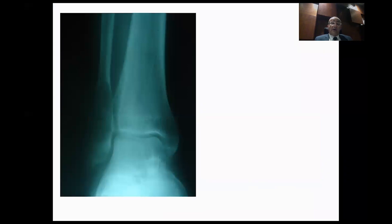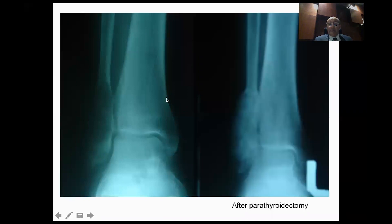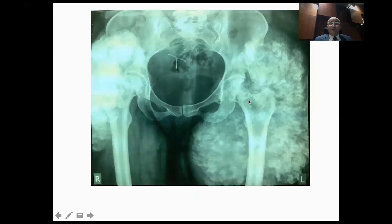Brown tumors of hyperparathyroidism are not treated surgically — they actually form bone once the parathyroid adenoma is resected. You can see the osteolytic lesion before and after parathyroidectomy it forms bone. Another metabolic condition is tumoral calcinosis: massive calcification that could be solitary or multiple, due to abnormal phosphate metabolism — it mimics a tumor but is actually a metabolic condition.